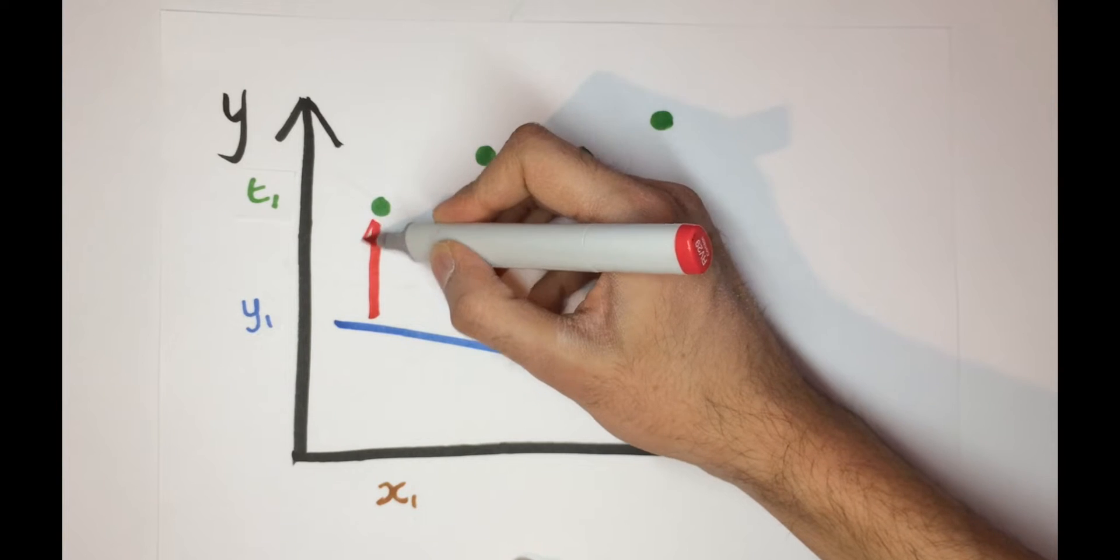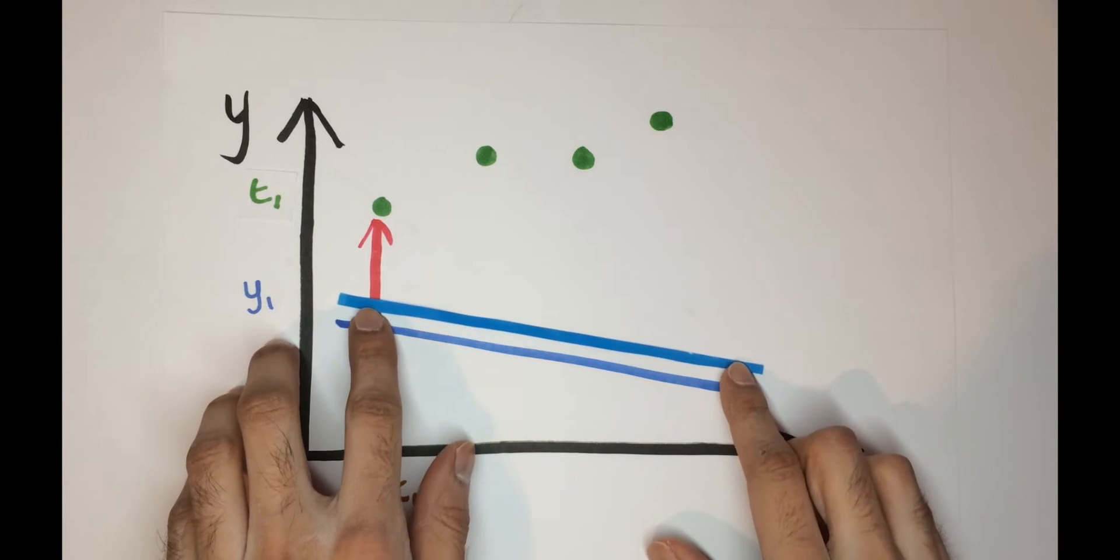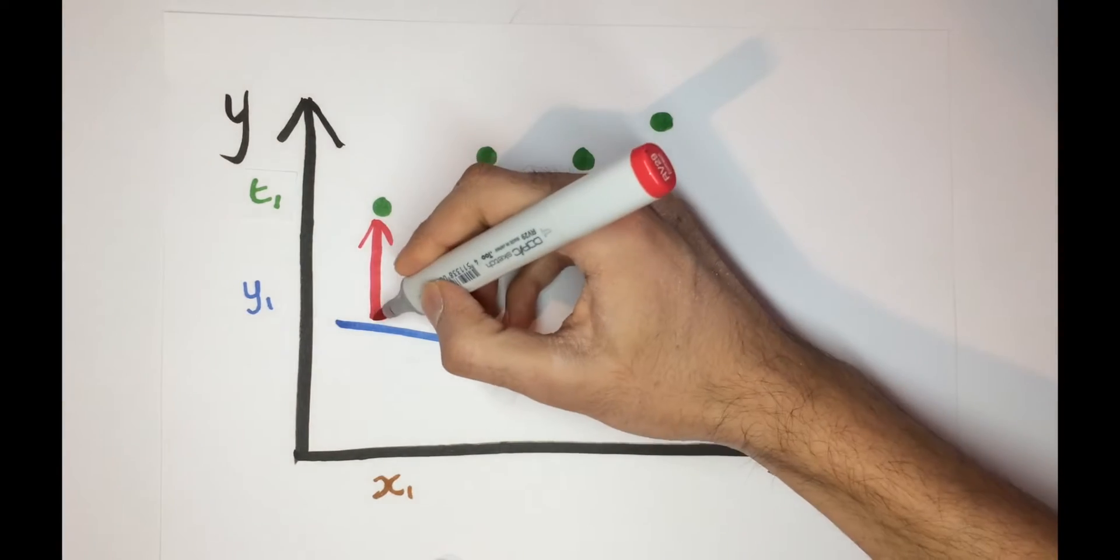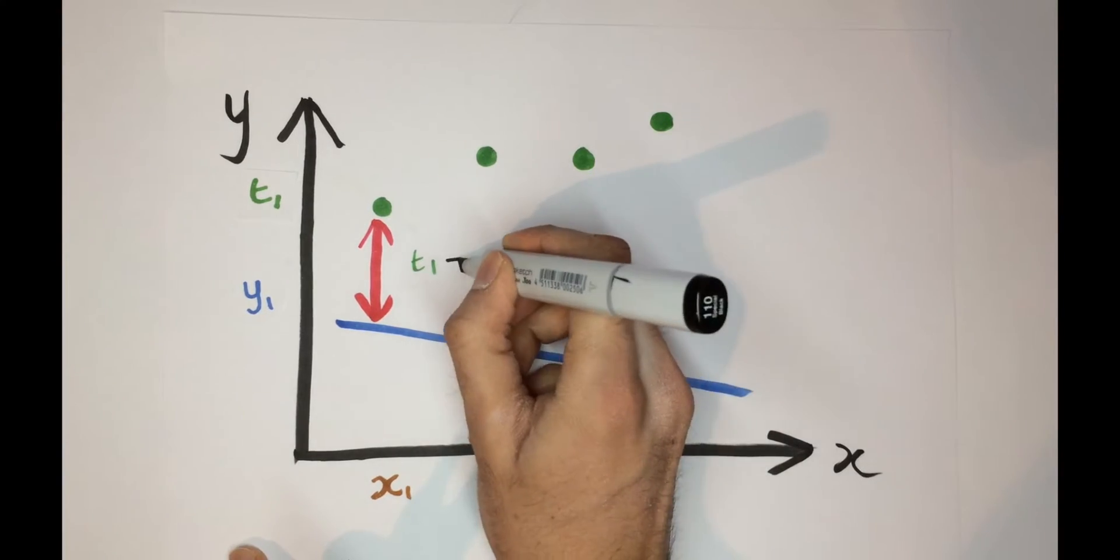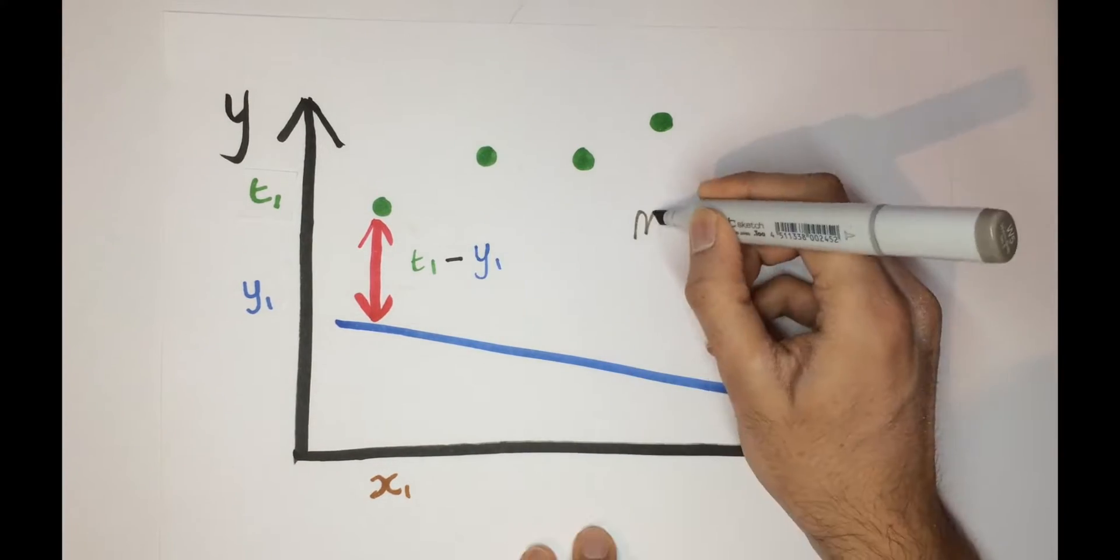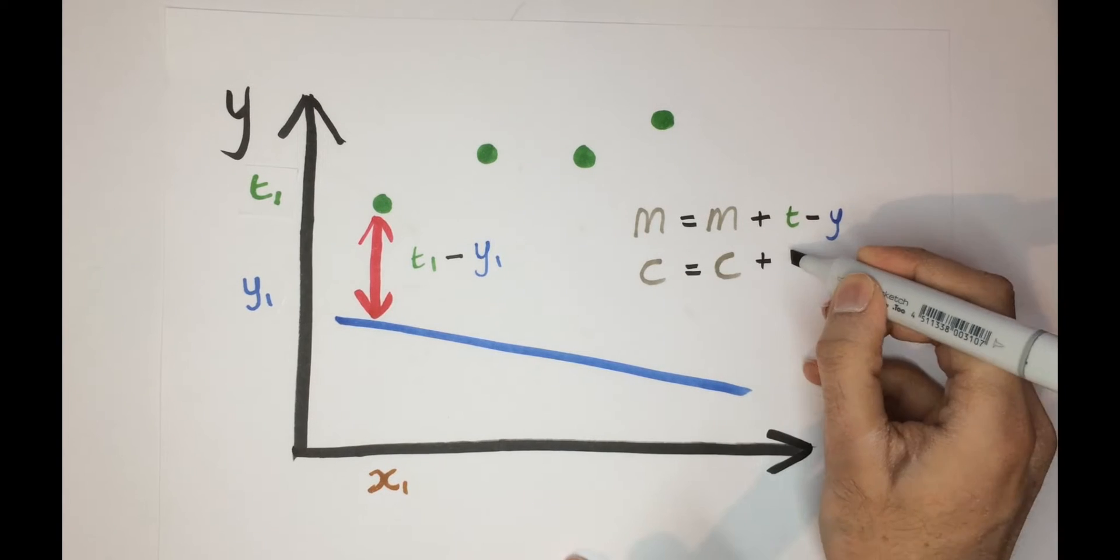If the predicted value is less than the target, then we want to bring our line up and this would require increasing the weight and bias by some amount. So let's make our update rule based on the signed error which is the target minus predicted value and add that amount to our weight and bias.